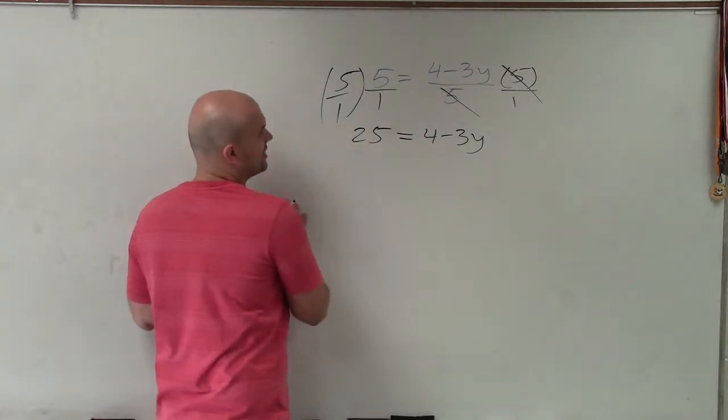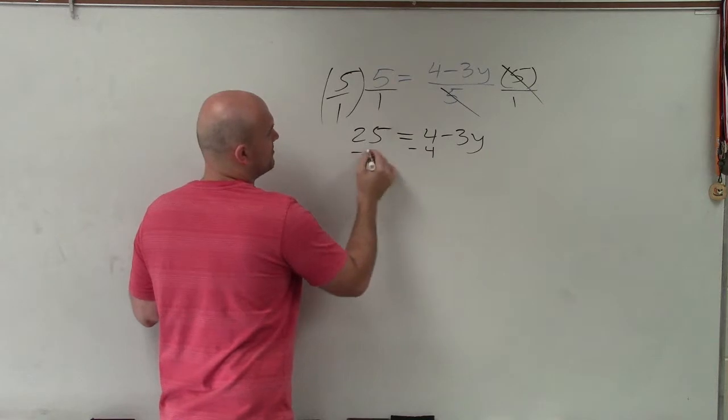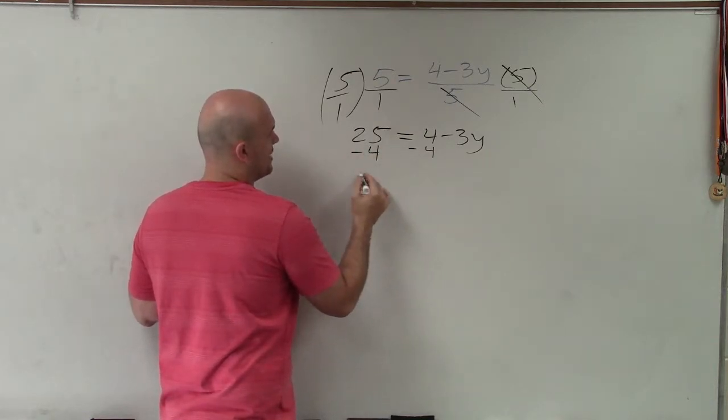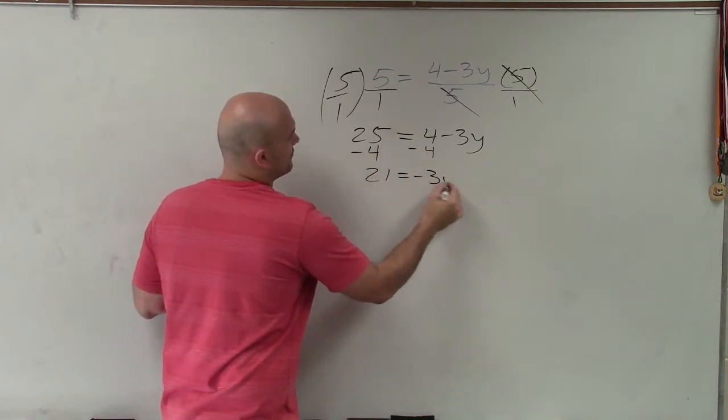So now, let's go and get our variable by itself. So I'll subtract 4 on both sides. And therefore, I have 21 equals negative 3y.